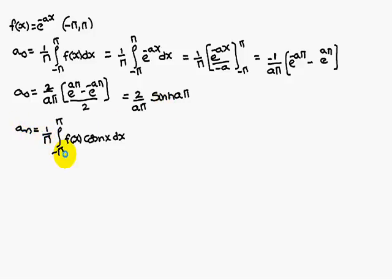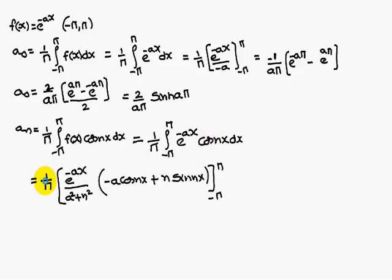Similarly, an is equal to 1 by pi integral minus pi to pi f of x cos nx dx. f of x is e power minus ax into cos nx dx. Integrating, we get 1 by pi into e power minus ax by a square plus n square, into minus a cos nx plus n sin nx, between the limits minus pi to pi.